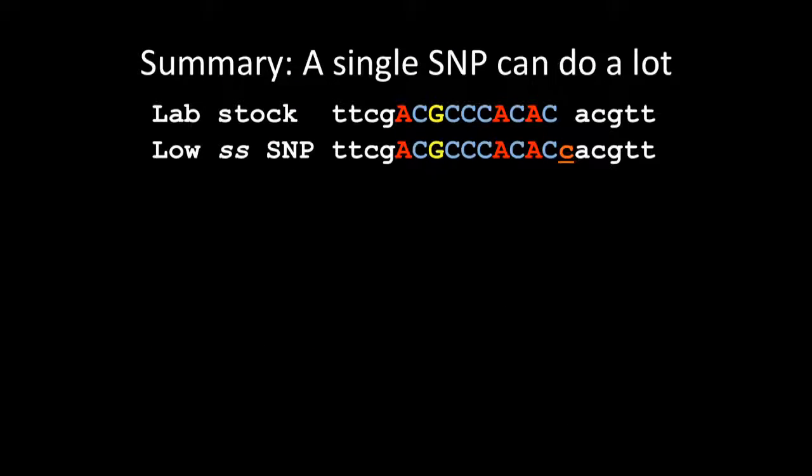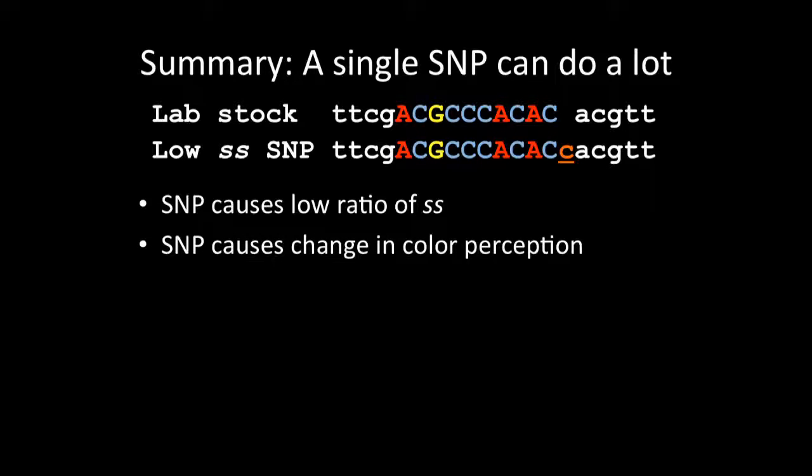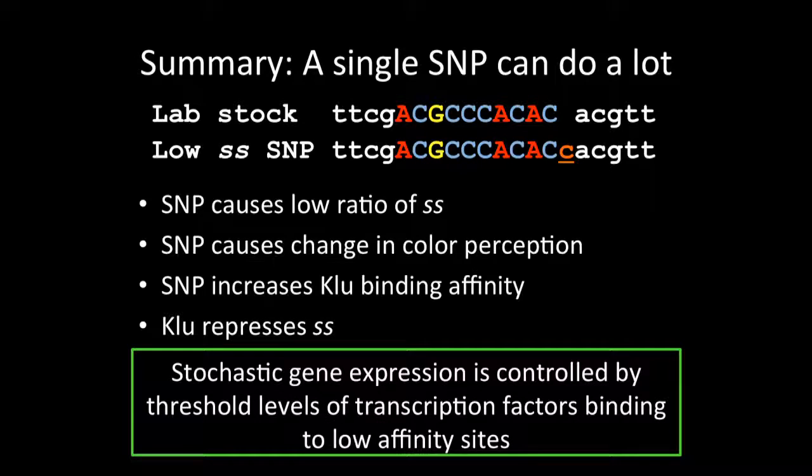Just to summarize, a single SNP can have many effects. In our case, it caused a low ratio of spineless, which ended up changing the color perception of flies. It increased clue binding affinity, and we determined that clue represses spineless. Our overall take-home message is that stochastic gene expression is controlled by threshold levels of transcription factors binding to low affinity sites.